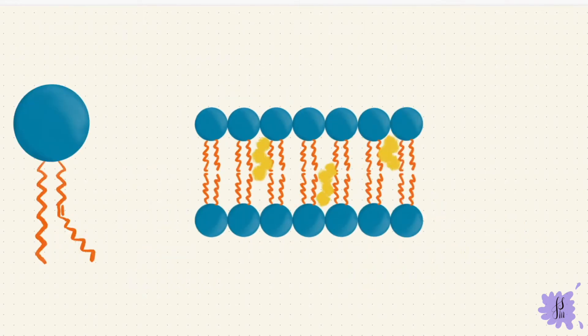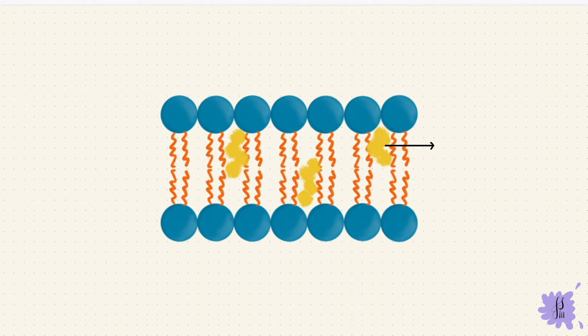But there's another lipid in the membrane, cholesterol, and that's embedded between the phospholipids. This cholesterol acts like a buffer and prevents temperature changes from affecting the fluidity of the membrane too much.